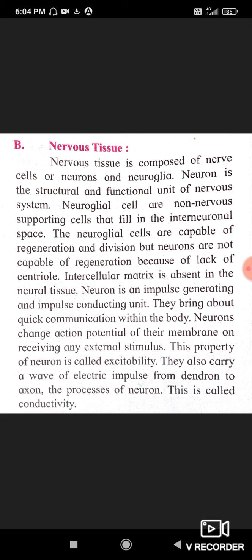Cell division chapter में हमने पढ़ा है कि centrosome का क्या function होता है। Centrosome में centrioles होते हैं — दो centrioles — जो opposite poles को move होते हैं during cell division। उन पर spindle fibers arrange होते हैं, chromosomes attach होते हैं, फिर chromosomes divide होते हैं और cell divide होती है। मतलब cell division के लिए centriole जरूरी है, लेकिन neurons में centriole नहीं होते, इसलिए neurons का regeneration और division नहीं हो सकता।